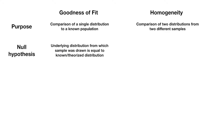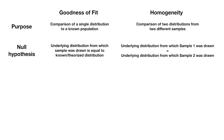In our null hypothesis for a goodness-of-fit test, we're interested in whether the underlying distribution from which our sample was drawn is equal to some known or theorized distribution. In a homogeneity test, we're interested in whether the underlying distribution from which sample one was drawn is equal to the underlying distribution from which sample two was drawn. This is very similar to the chi-squared test we've done so far, with some slight differences.